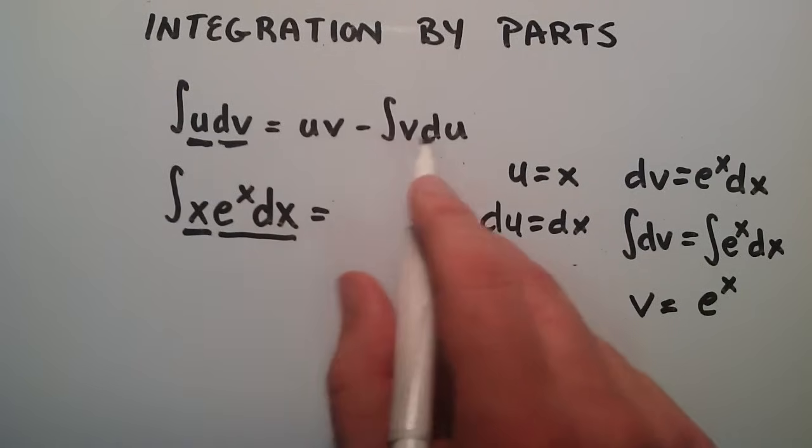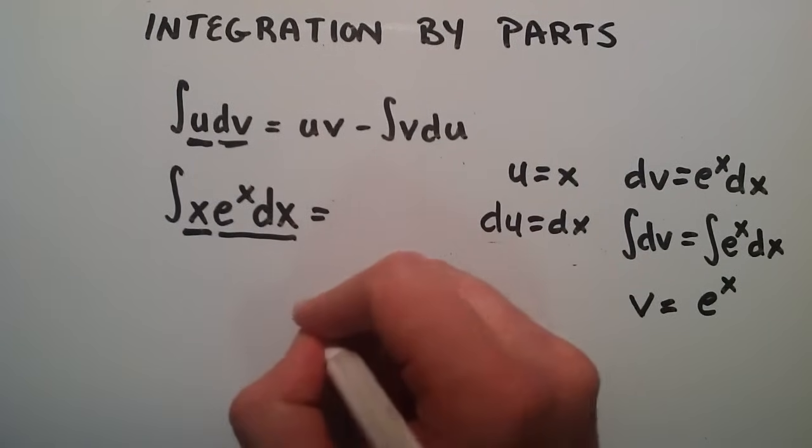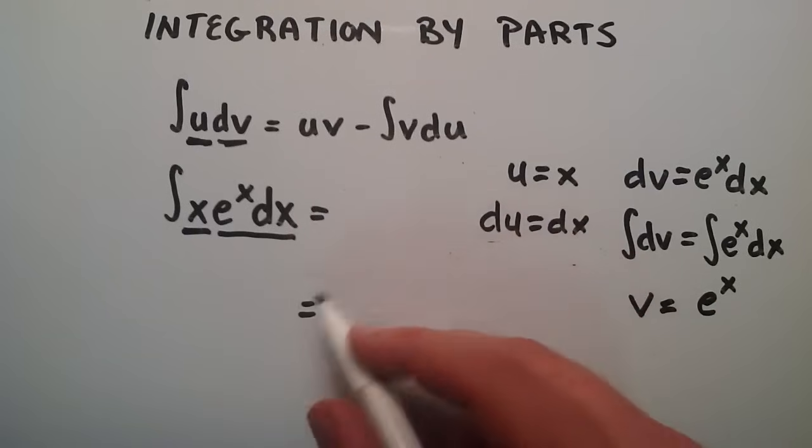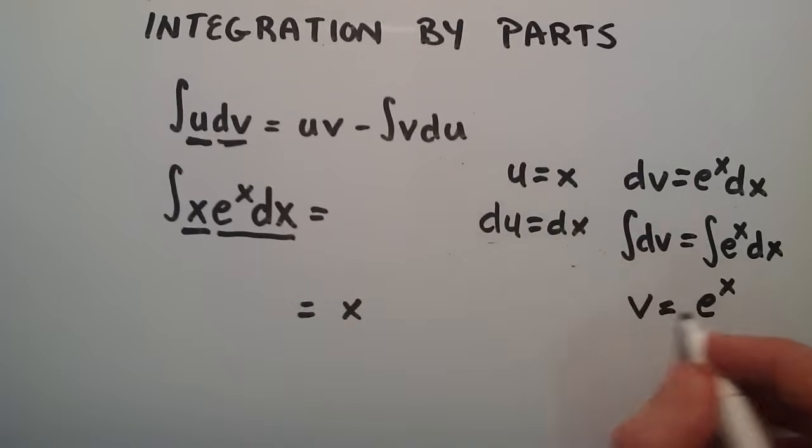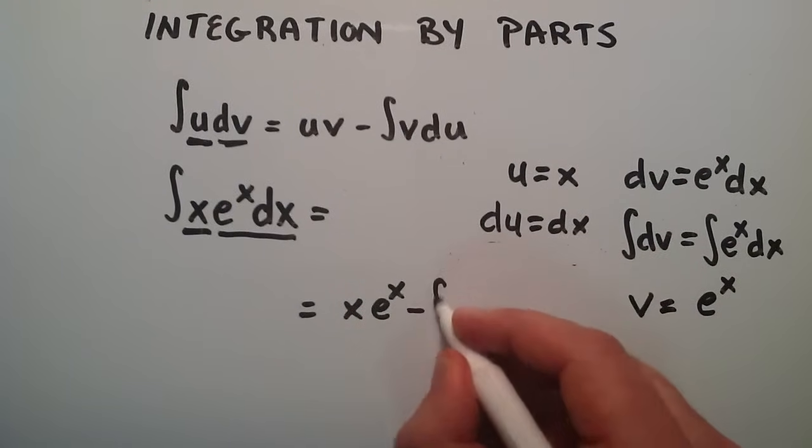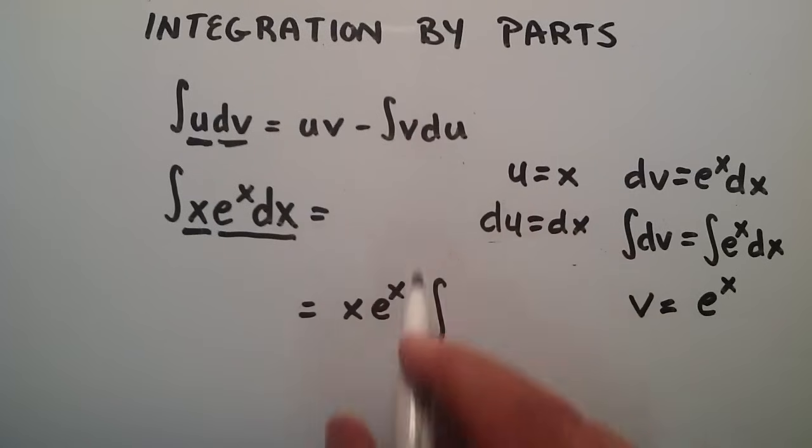Now we have all the parts we need. Basically this is going to equal u times v. u is equal to x, v is equal to e to the x. So this is our u times v right here.